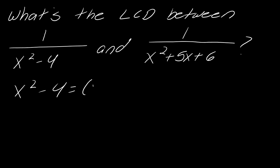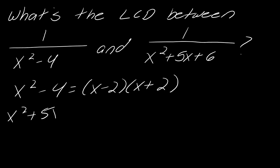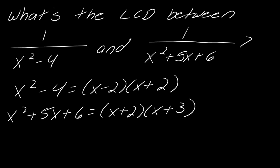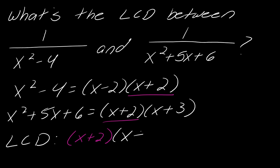Factoring: x² − 4 = (x − 2)(x + 2), and x² + 5x + 6 = (x + 2)(x + 3). The LCD is always what they have in common — in this case (x + 2) — times the things they don't have in common. So the LCD is (x + 2)(x − 2)(x + 3). This is exactly why I advocate for this specific way of thinking about LCDs: find what they share, then multiply in everything they don't.